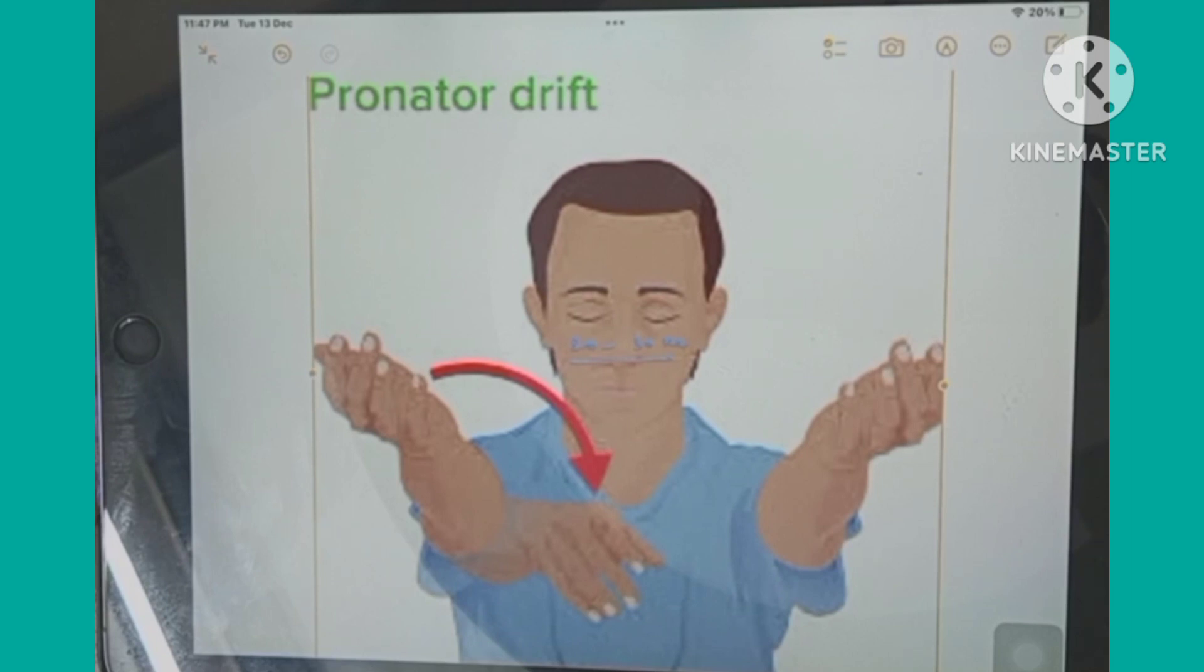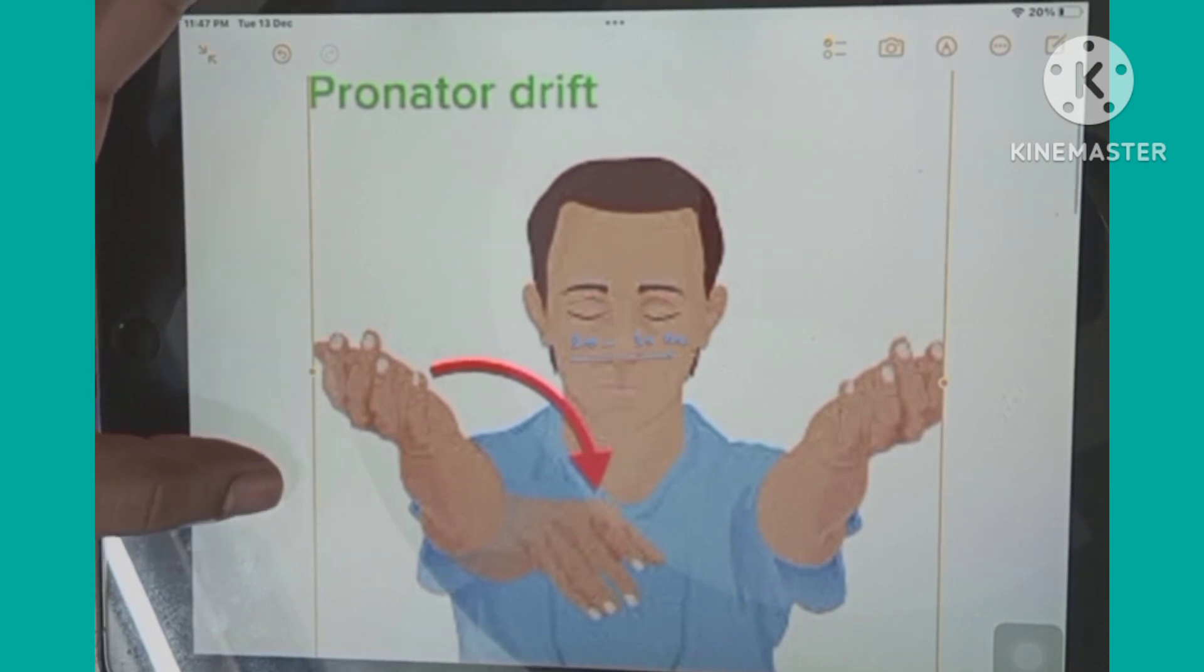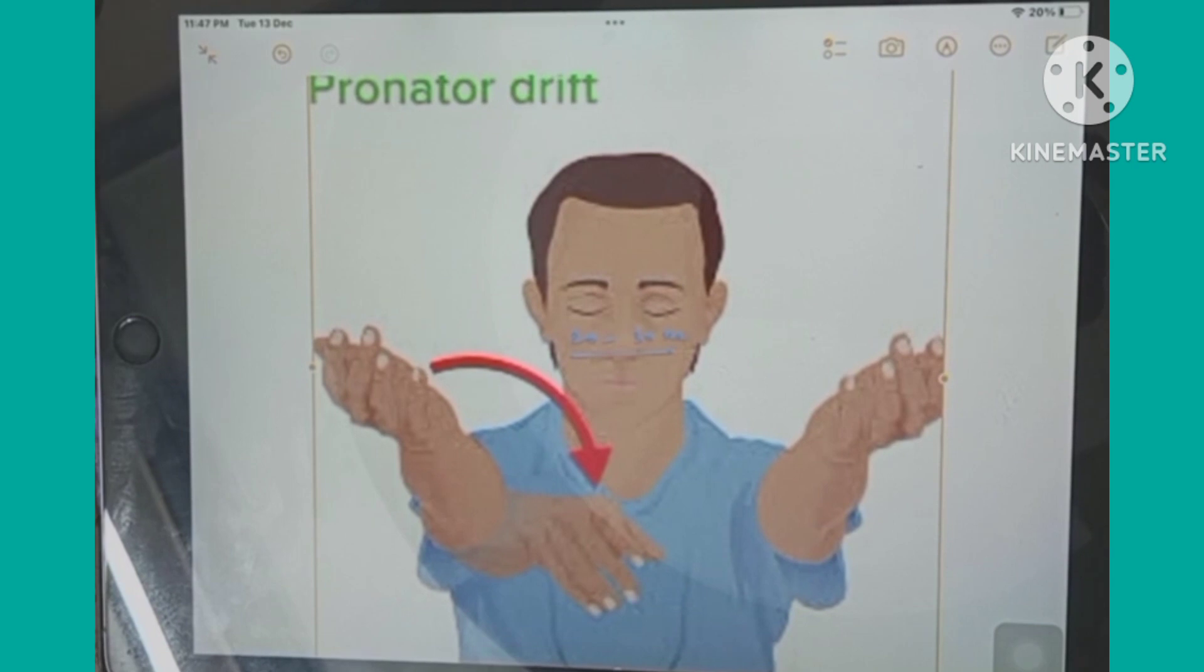We'll ask the patient to outstretch both arms in front of him with palms facing upwards, as shown in the figure with that red line. If there is pronator drift, there will be pronation.